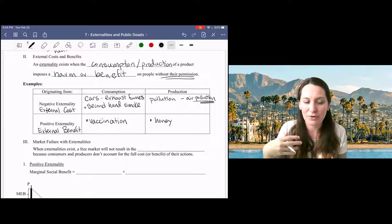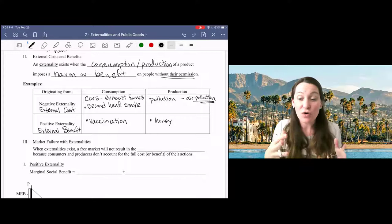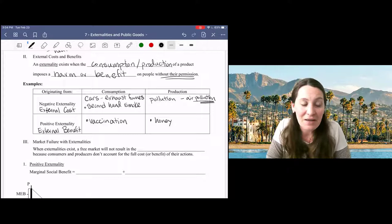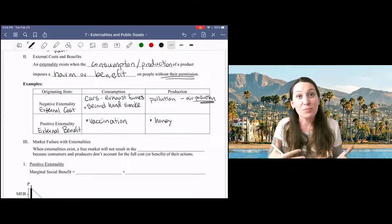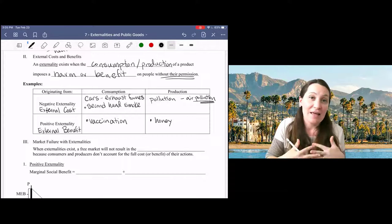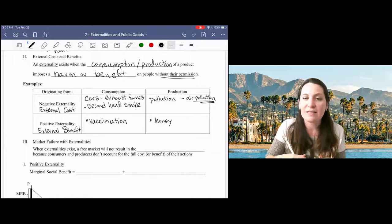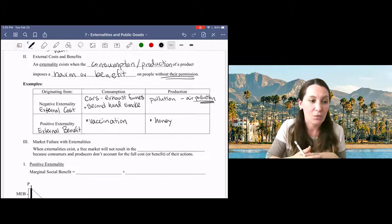Some of that is internalized. You may not know this, but bees are actually trucked all around the country to pollinate different crops at different times of the year. And that's an important part of our agricultural system. So the extent to which farmers pay to have bees come to their land to help pollinate, say, almond trees, then that benefit is internalized. But what's not internalized is the benefit to other non-market plants or ecosystems in general.